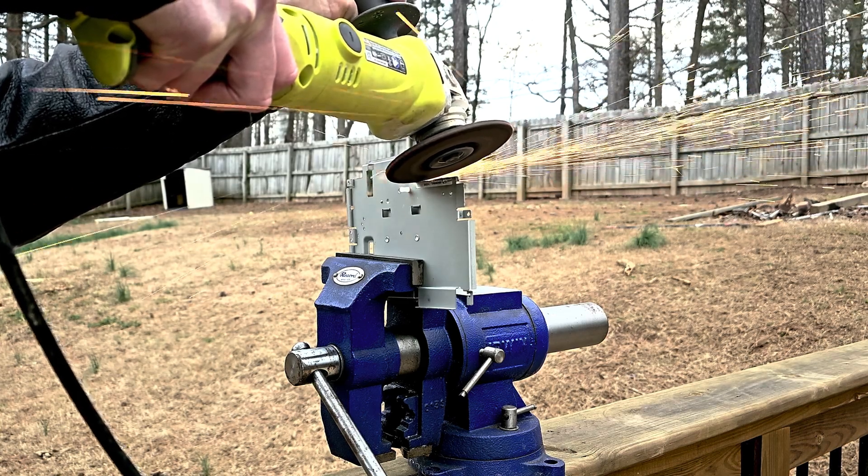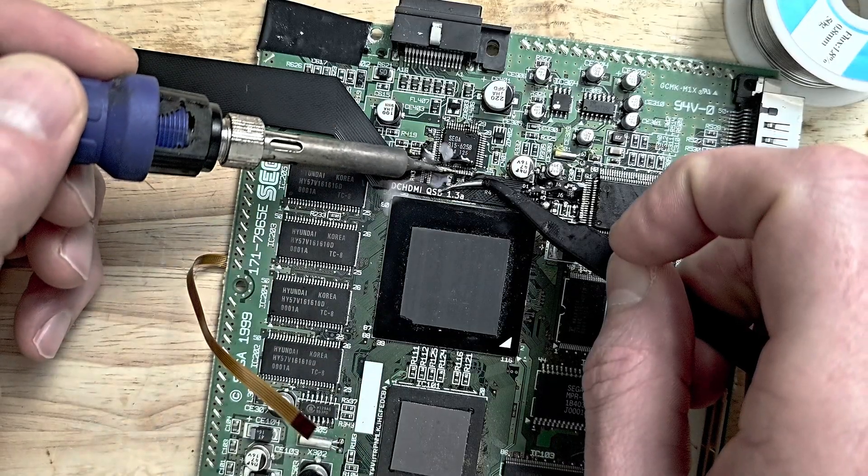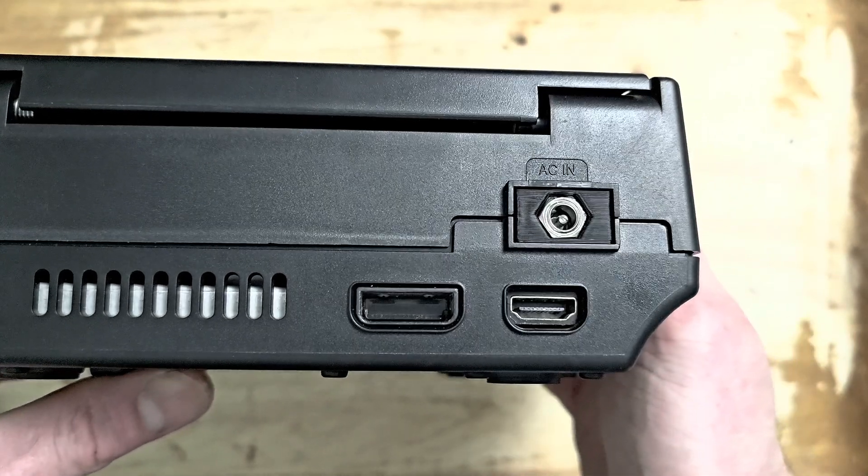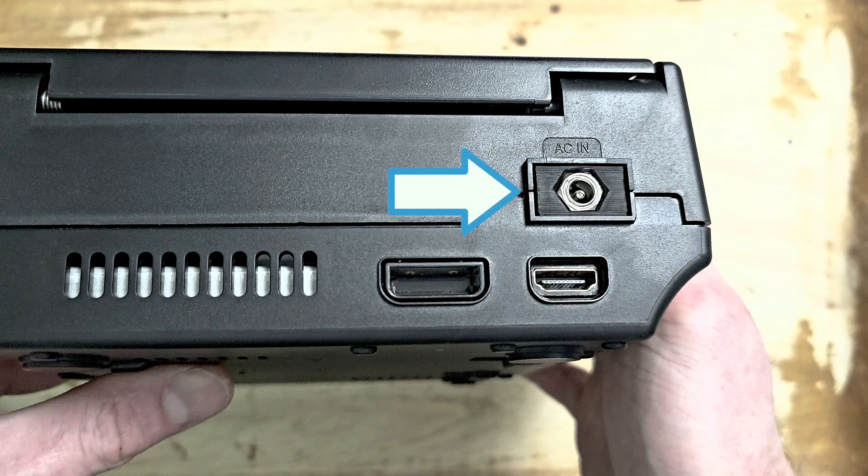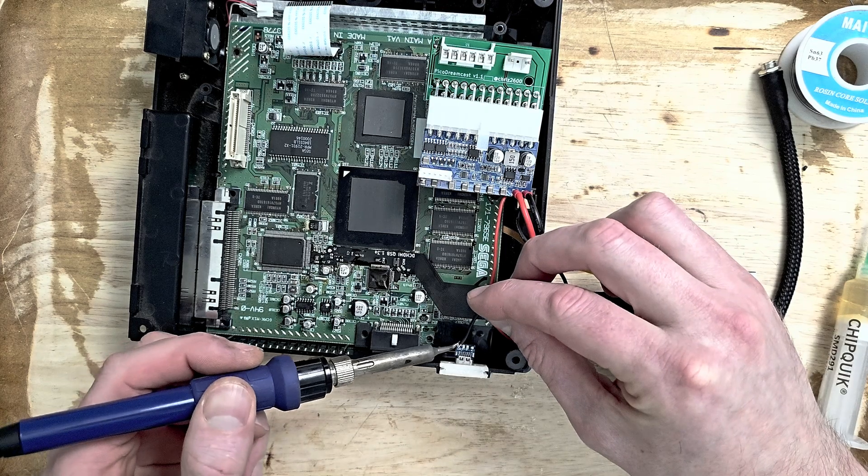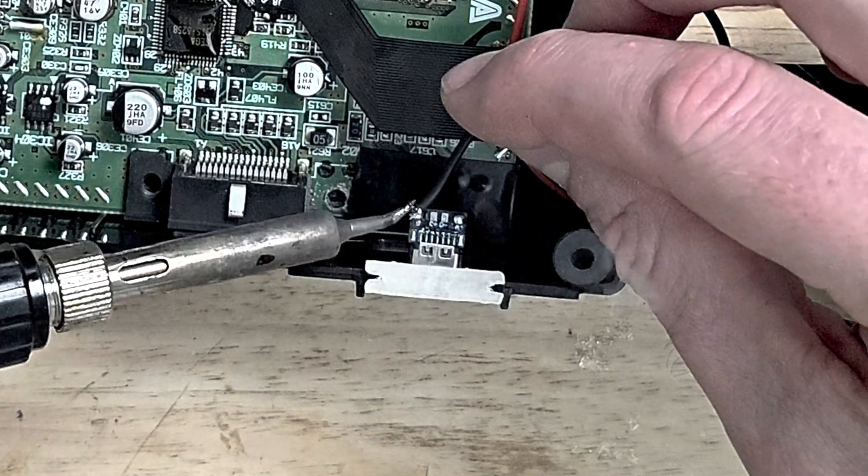In the previous episode we gave this Dreamcast a traditional HDMI port, but there was one small detail that kept bugging me. And I can hear you now, well that's an easy fix Russ, just replace that DC jack for a USB-C one.